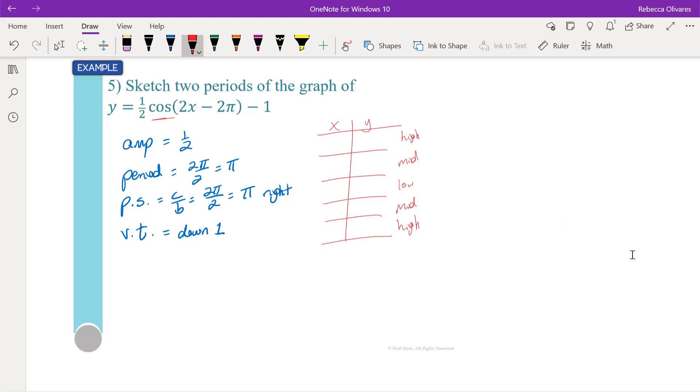The amplitude and the vertical translation affect the graph vertically, and then the period and the phase shift affect the graph horizontally.